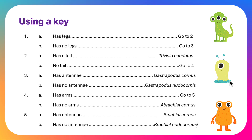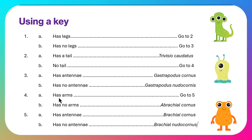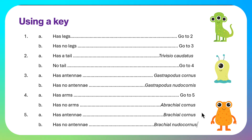The next one doesn't have legs, so 'has no legs' — go to three: 'has antennae or has no antennae?' — this one has antennae, so we've got the name of that one. For the last one: has legs — go to two; has a tail? No, it doesn't have a tail, so go to four; has arms? Yes — go to five; has antennae? No — so it must be Brachial nudocornis. That's how we do it: start at the beginning, ask yes or no questions, and follow through until we get the name of our species.